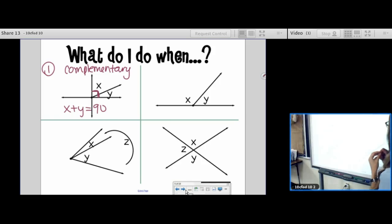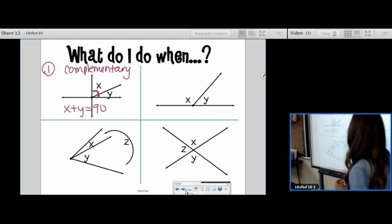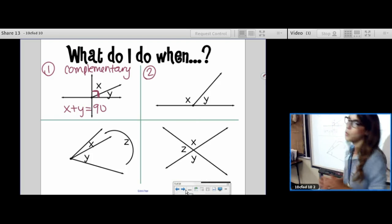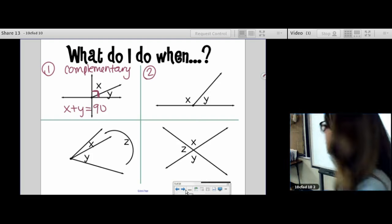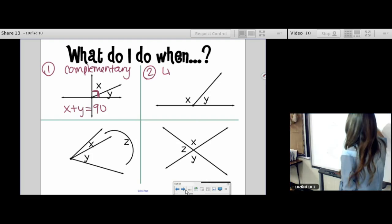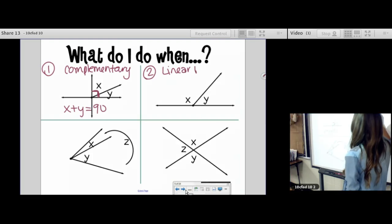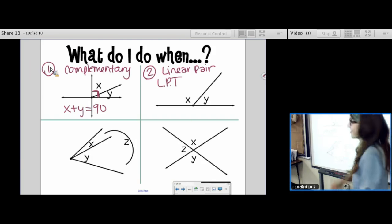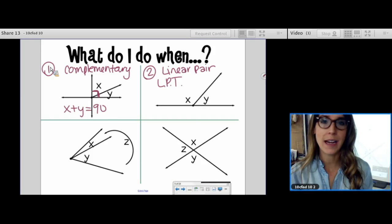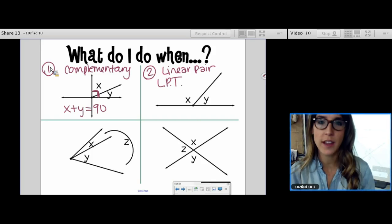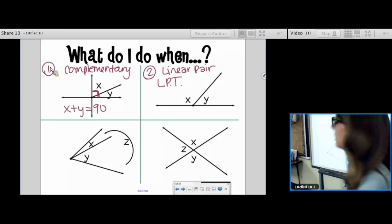Okay, number two. I need a reason. I need to know what those angles are. Yes, those are adjacent, but they're more than adjacent. They are a linear pair. And I know by the linear pair theorem, I know that those add to equal 180 because if two angles are a linear pair, then they are supplementary.